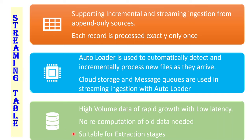Finally, Streaming Table is more suitable for extraction stages. In any ETL pipeline, we have three stages: extraction, transformation, and loading. Streaming Table is more suitable for the extraction stage, which means the bronze layer in any medallion architecture. This extraction stage deals with different source systems and integrates with them. Whenever we have to consume data from streaming sources like Kafka or Azure Event Hub, then we can think of building a Streaming Table.